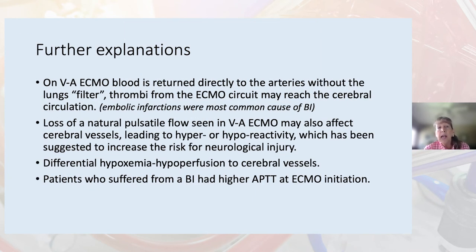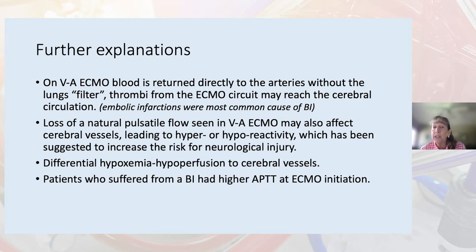On VA ECMO, blood is returned directly to the arteries without the lungs as a filter, so thrombi from the ECMO circuit may reach the cerebral circulation. Loss of natural pulsatile flow seen on VA ECMO may also affect cerebral vessels, leading to hyper- or hypo-reactivity, which has been suggested to increase the risk for neurologic injury. Additionally, differential hypoxemia or hypoperfusion to the cerebral vessels is a concern. Patients who suffered brain injury had higher APTT at ECMO initiation. The study's limitations include its retrospective nature, and the clinical significance of asymptomatic infarcts could be debated.